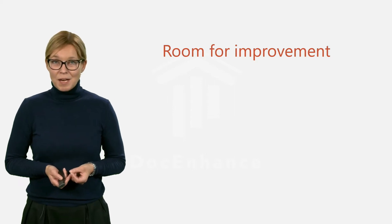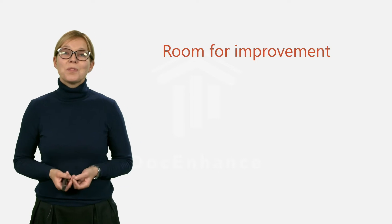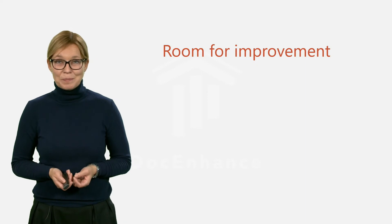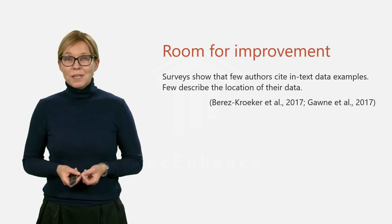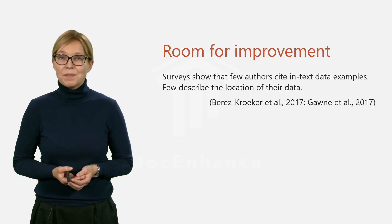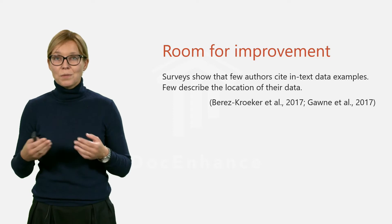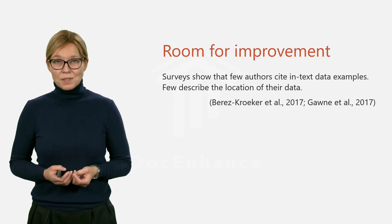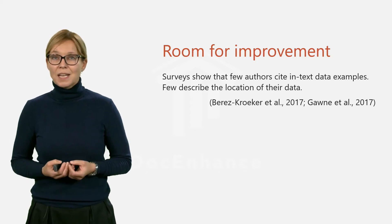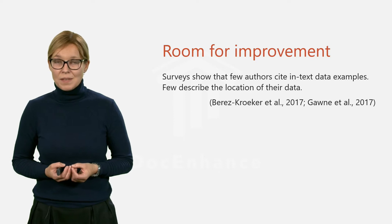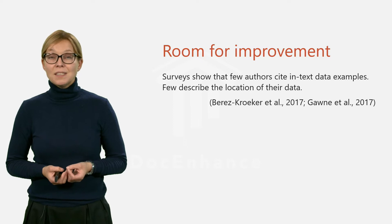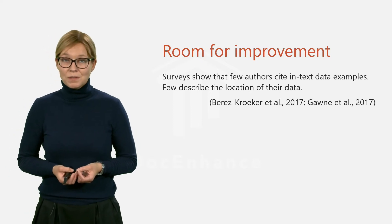A lot of things have happened since 1994, but there is still much room for improvement. In 2017, two surveys were published. First, a survey of 100 monographs from the period 2003 to 2012 showed that a large majority of authors did not describe the location of their data, nor did they offer any data citation next to the language examples in the text. The second survey, which focused on papers published in nine scientific journals in the same period, revealed a similarly miserable situation.